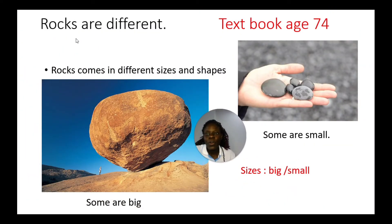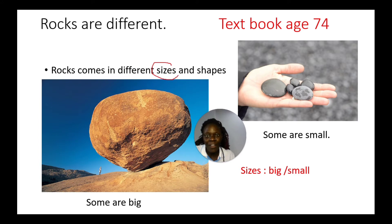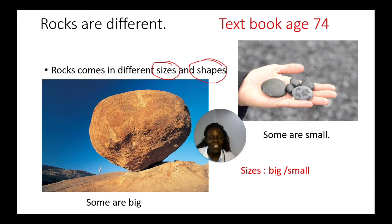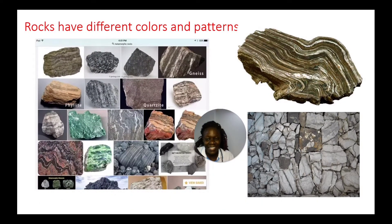On textbook page 74 — rocks are different. Rocks come in different sizes: some are big and some are small. They also come in different shapes. Some are irregular, which means they don't have a defined shape.